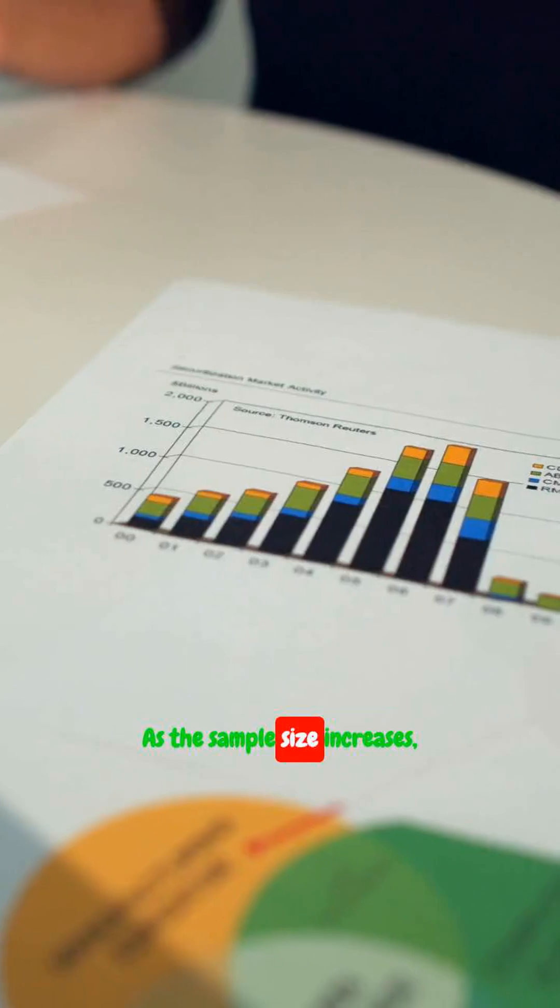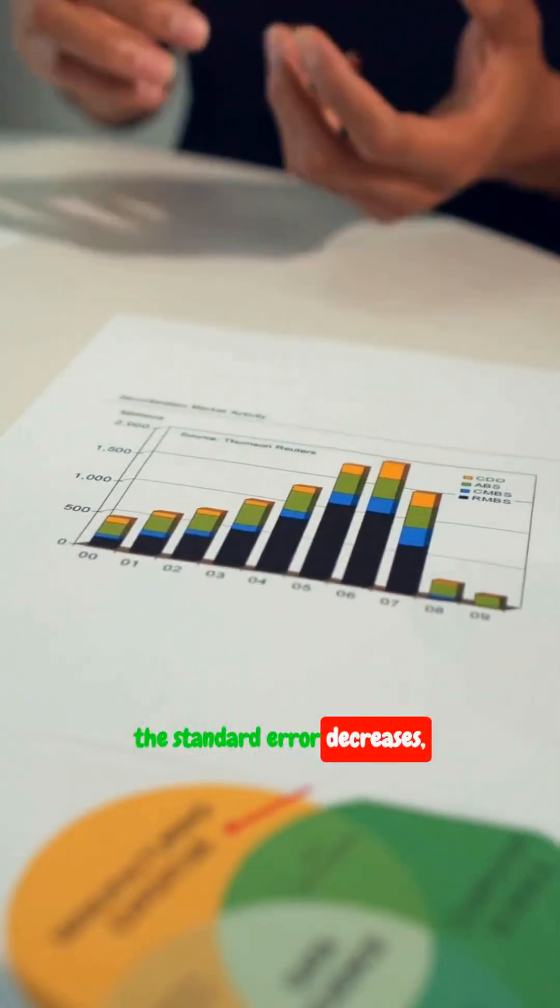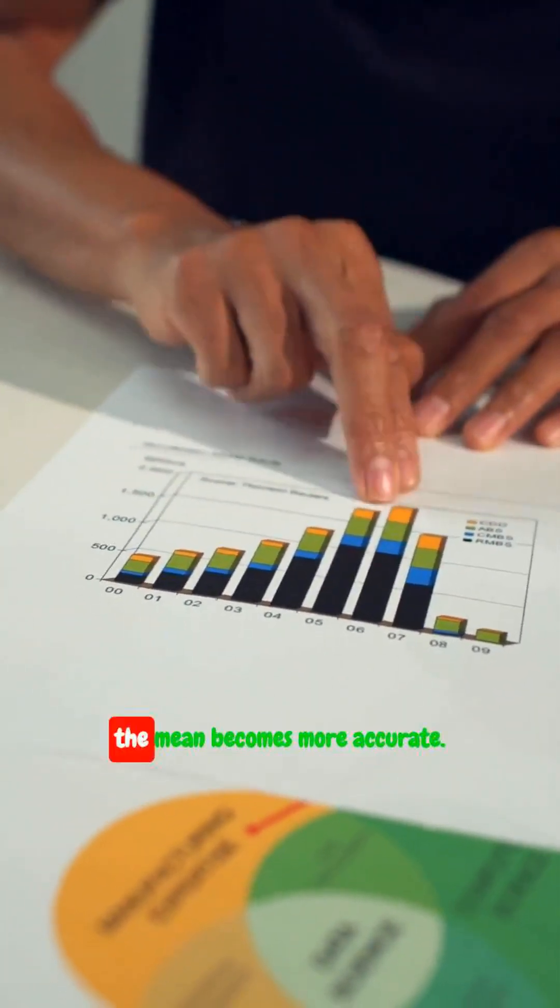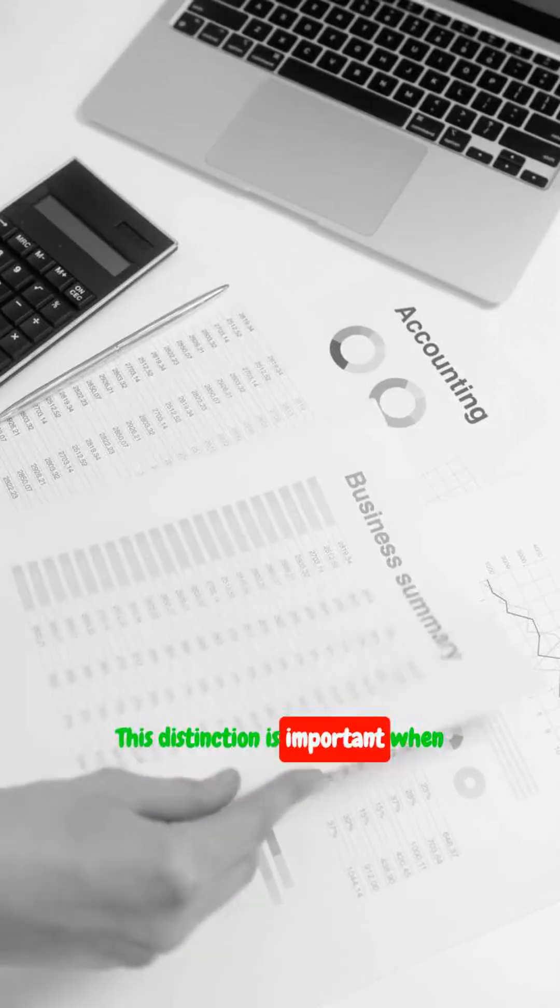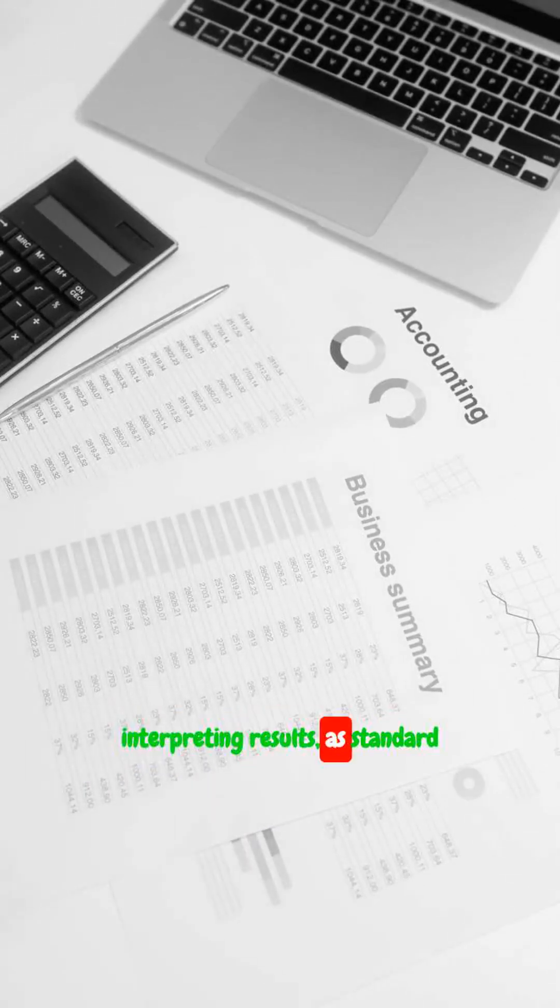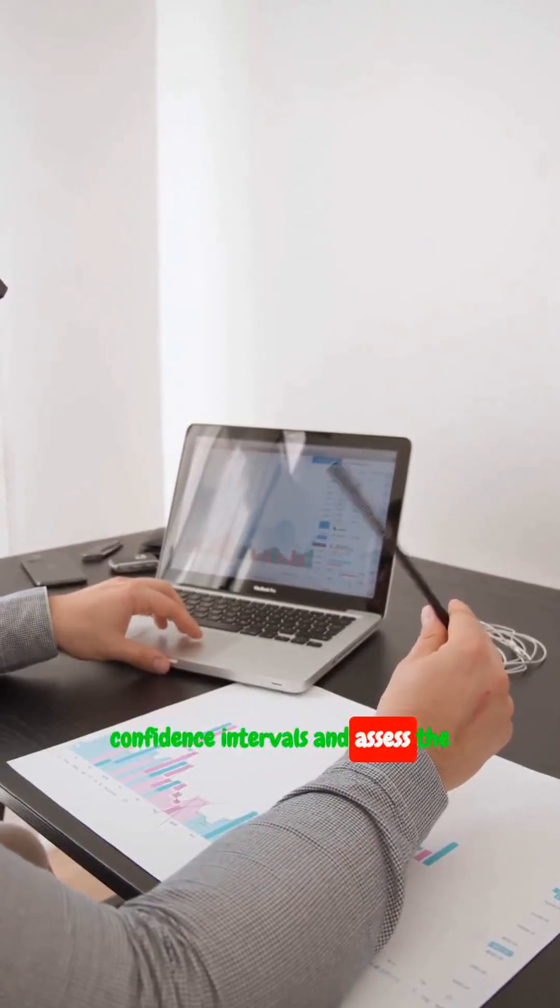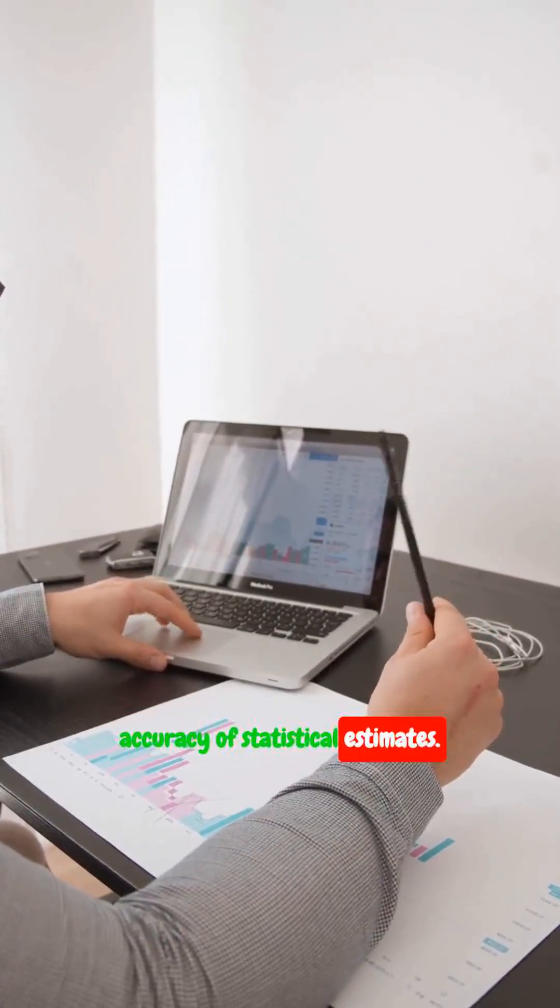As the sample size increases, the standard error decreases, meaning our estimate of the mean becomes more accurate. This distinction is important when interpreting results, as standard error is commonly used to construct confidence intervals and assess the accuracy of statistical estimates.